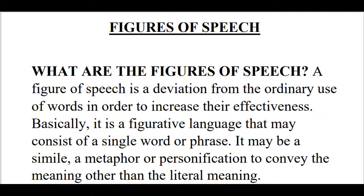Basically, it is a figurative language that may consist of a single word or a phrase — it may be a simile, a metaphor, a personification — to convey a meaning other than the literal meaning. The poet is using some words but does not mean what he is using; he wants to convey a different meaning, just like the poem Road Not Taken. The road does not mean the physical road, but rather the decisions and opportunities we have not taken.